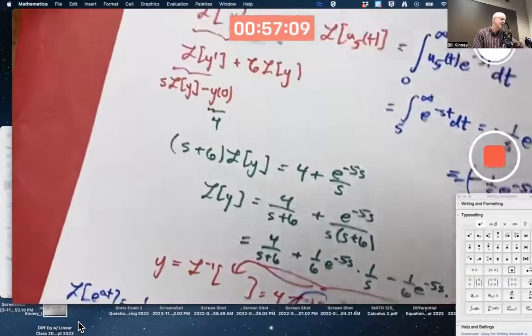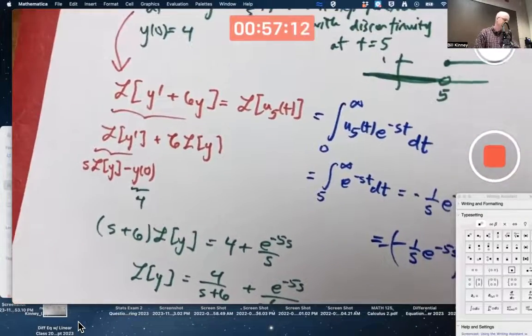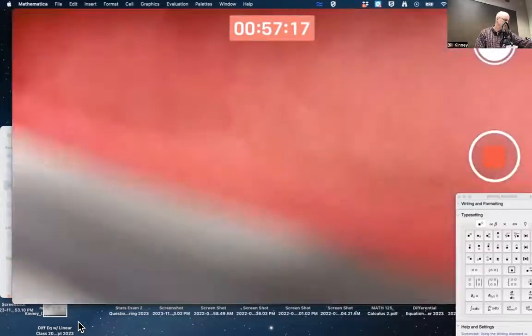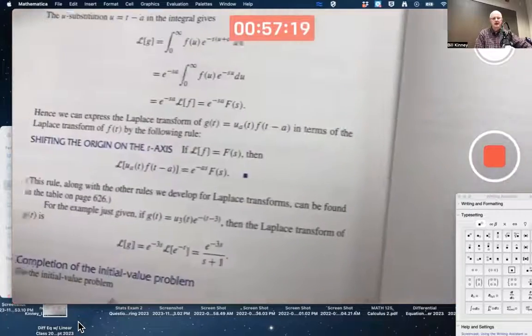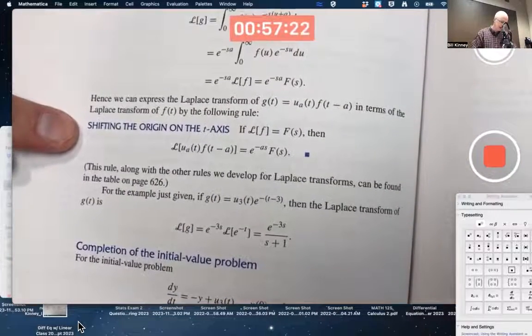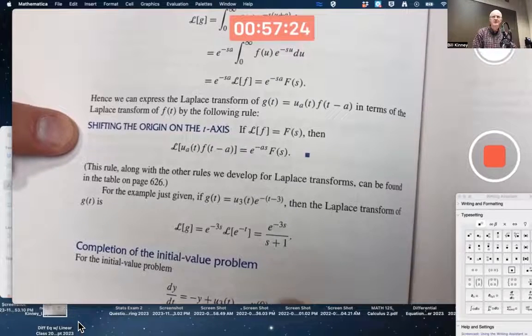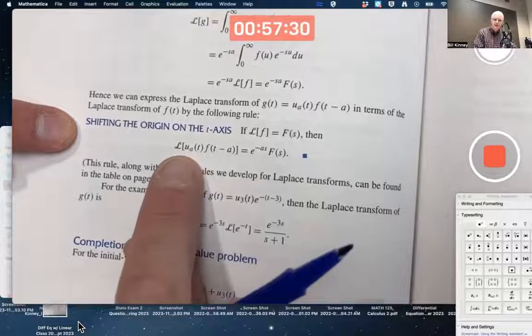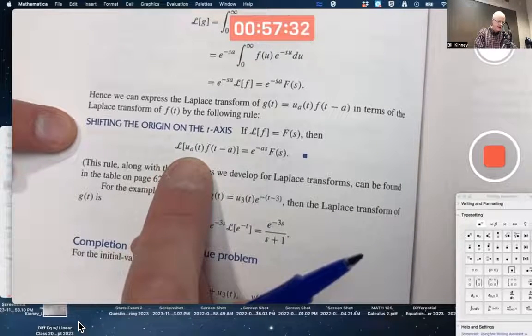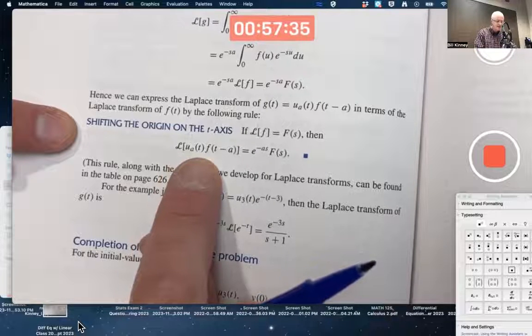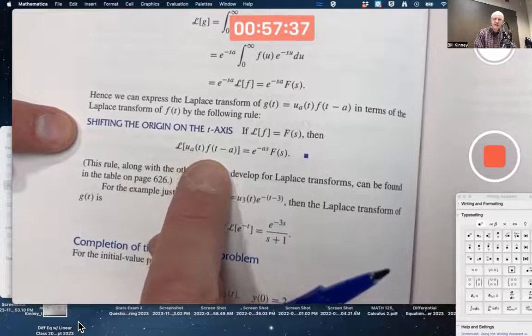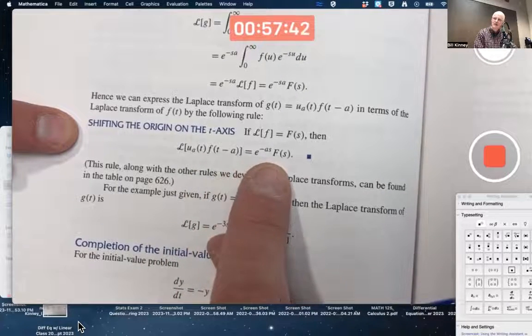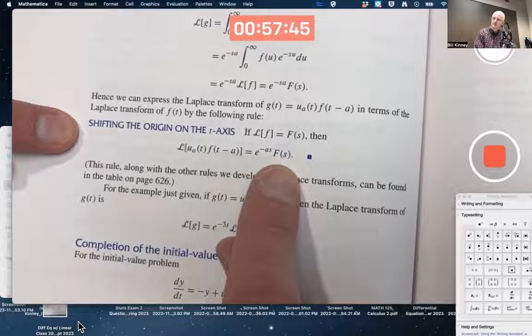In section 2, it's called the shifting on the t-axis property of Laplace transforms. It's not too hard to prove. Shifting the origin on the t-axis property, also called the first shifting property. There's a second shifting property in section 6.3. The Laplace transform of the unit step function with discontinuity at t equals a times little f of t minus a is e to the negative as times capital F of s, where capital F of s is the Laplace transform of little f.